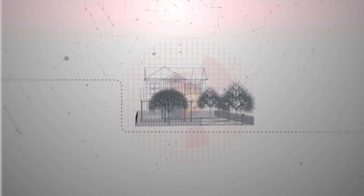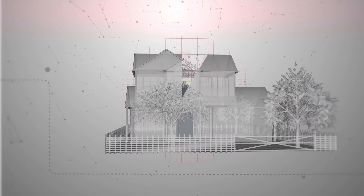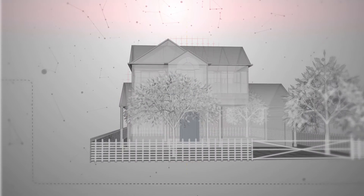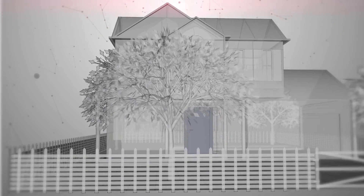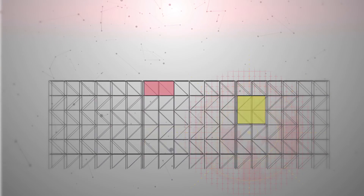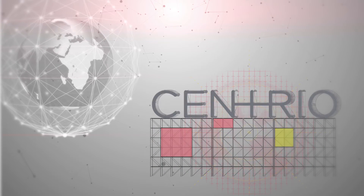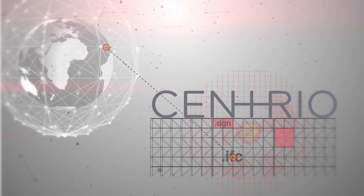For PERI, BIM represents a groundbreaking technology with which all construction processes can be planned and controlled — from the initial idea through to the actual operation of buildings. PERI therefore focuses on the expansion of formwork and scaffolding planning with process data that goes far beyond the technical solution itself. In this connection, PERI already has a number of solutions.